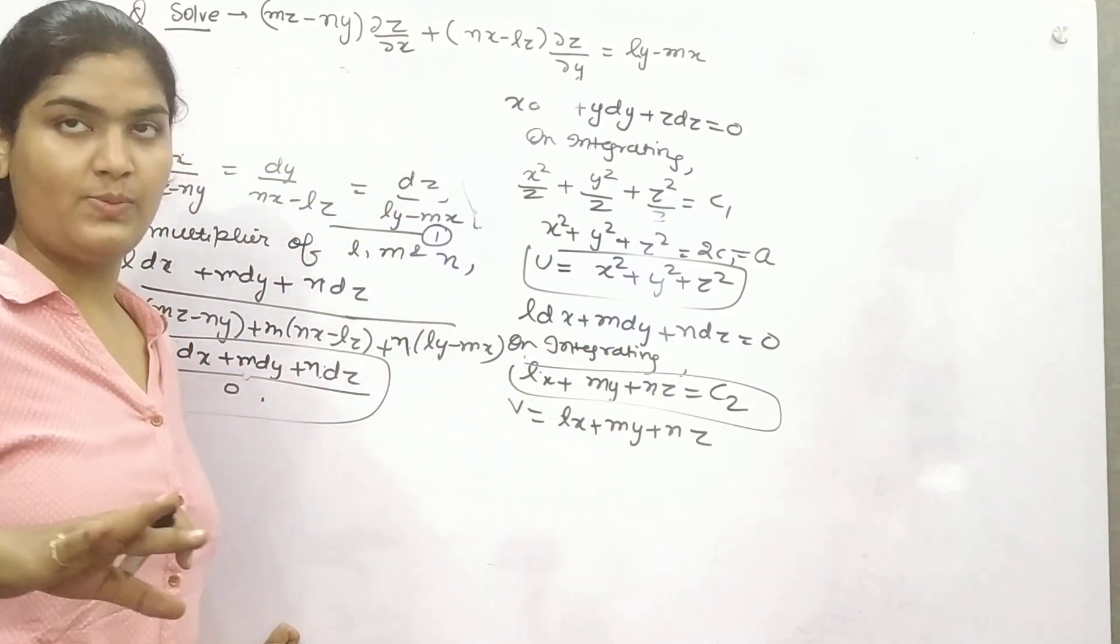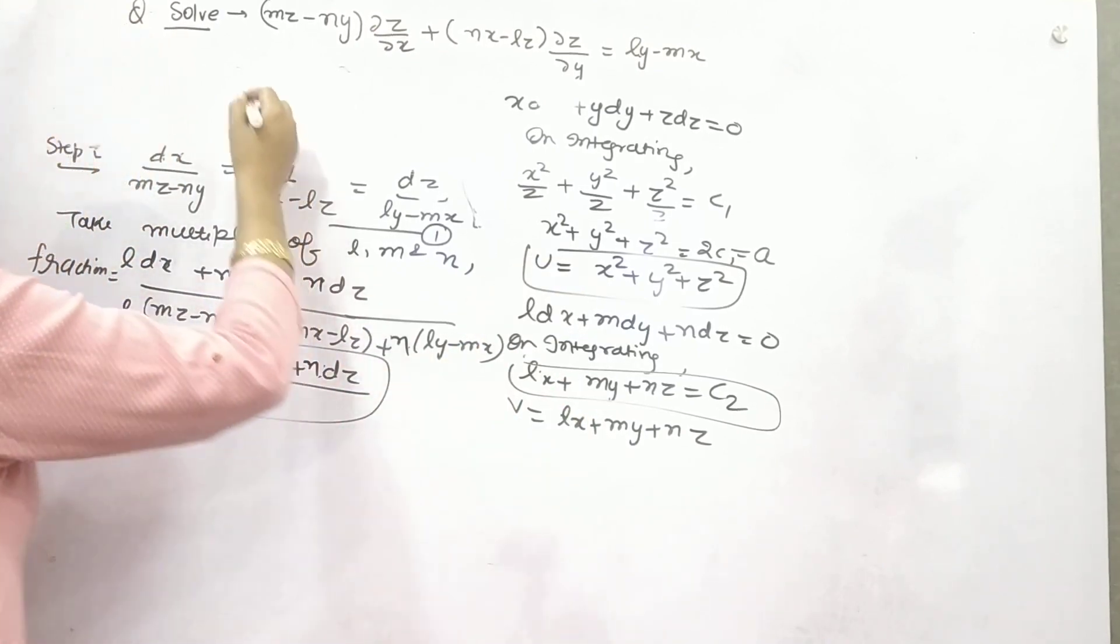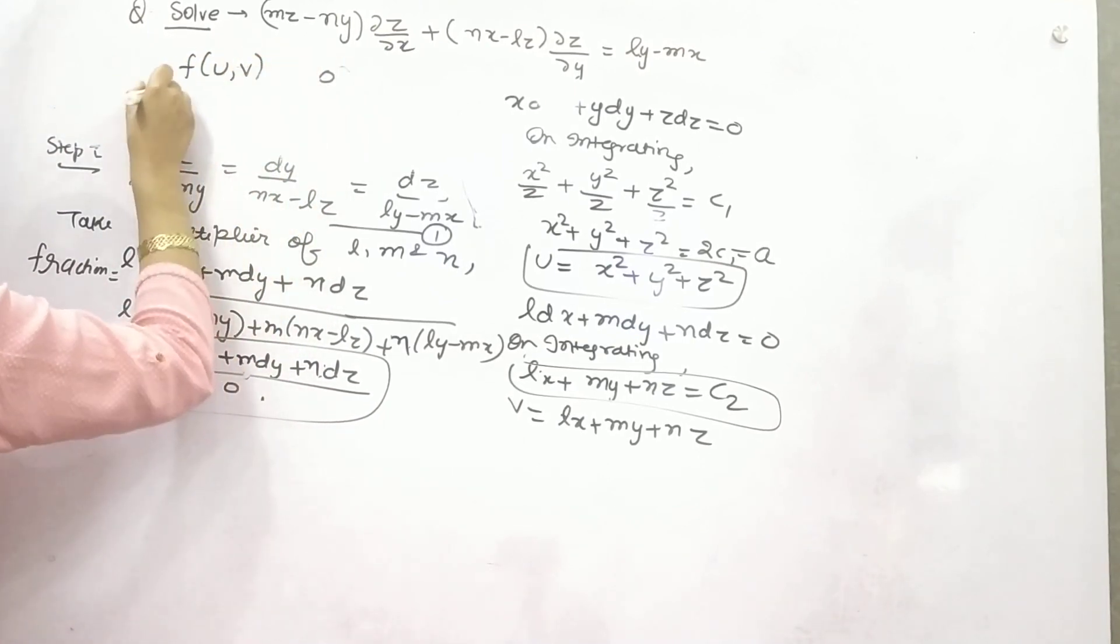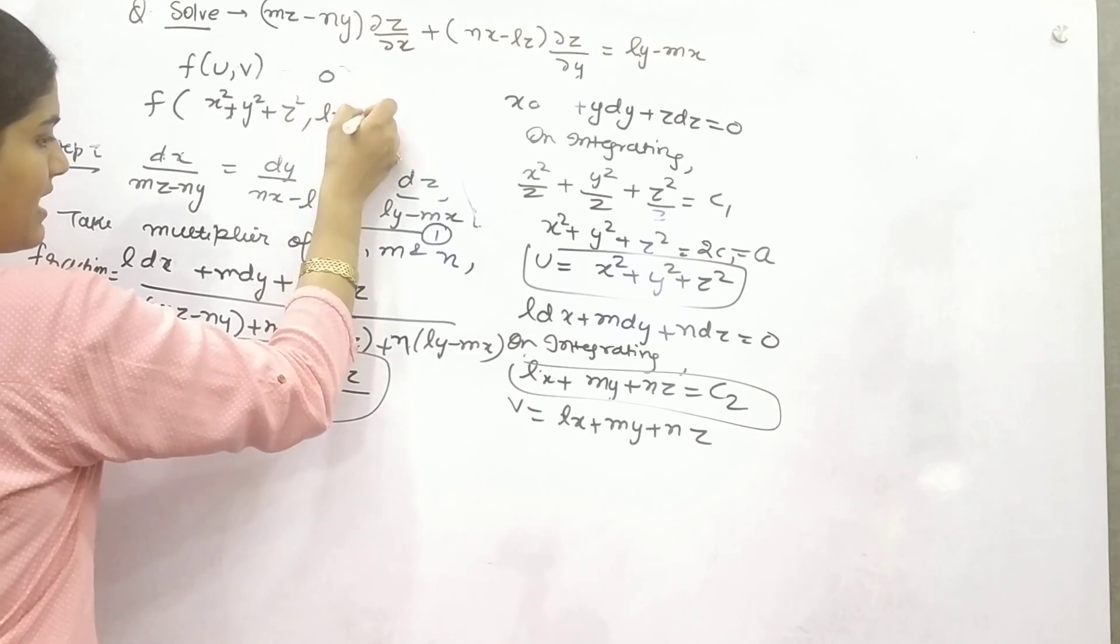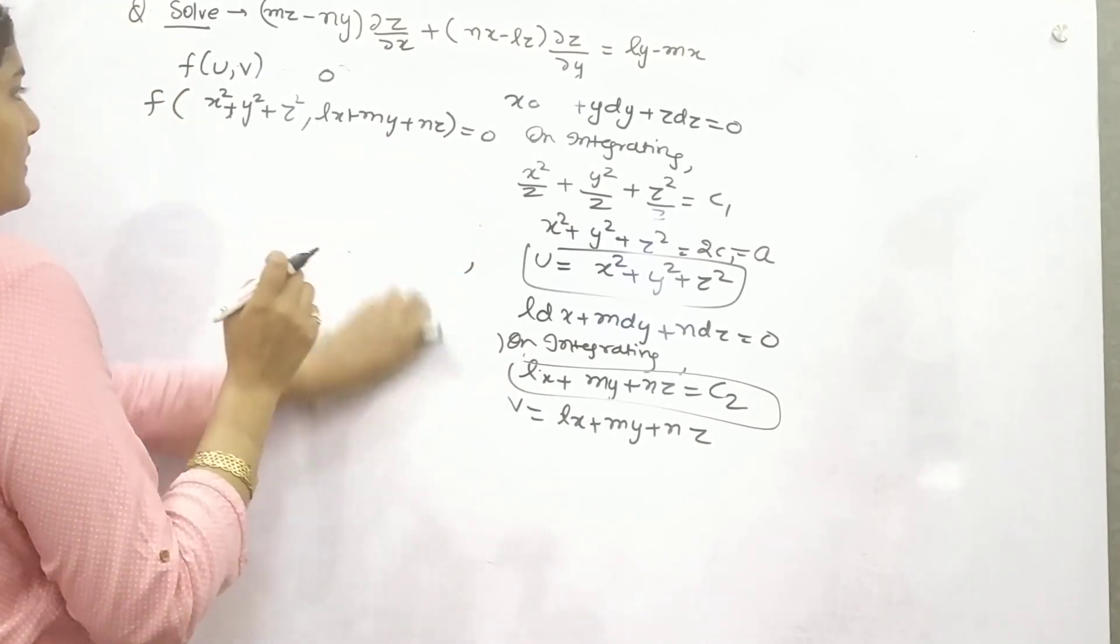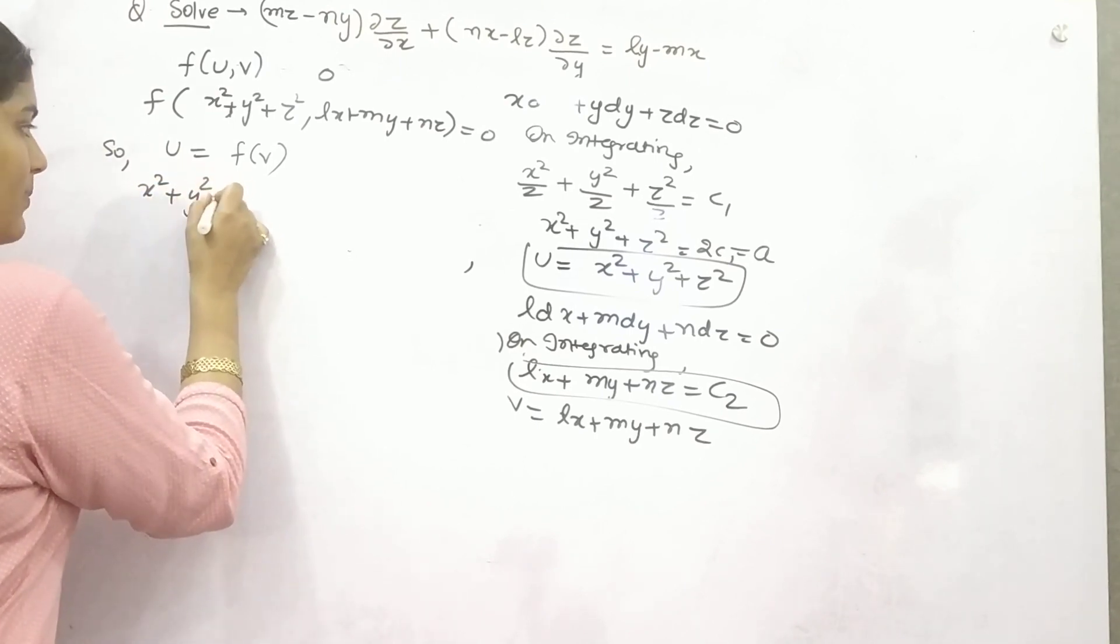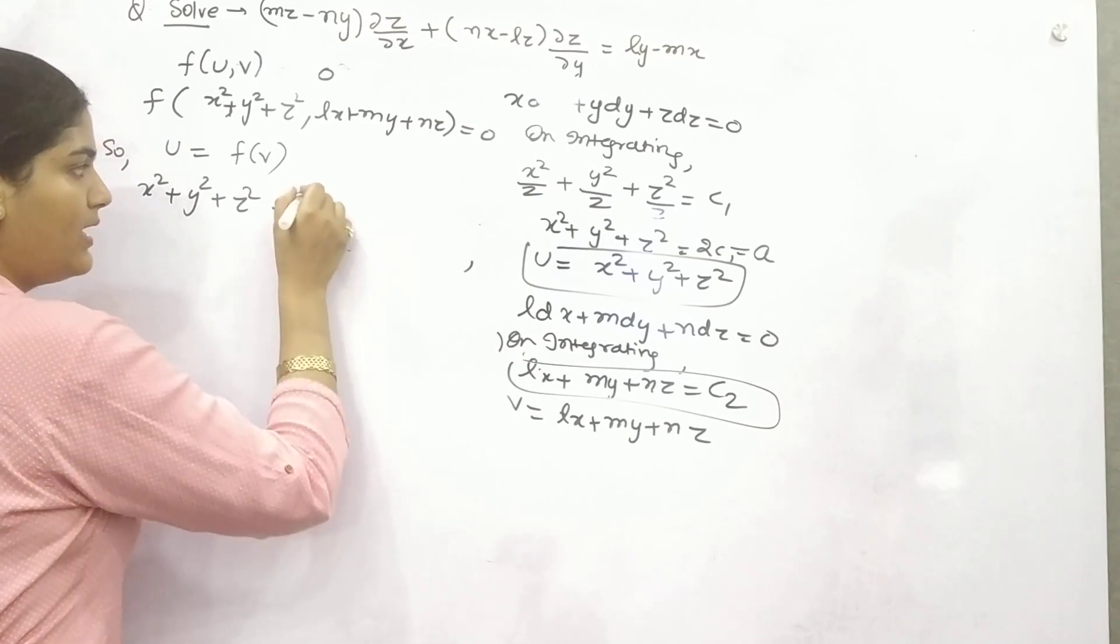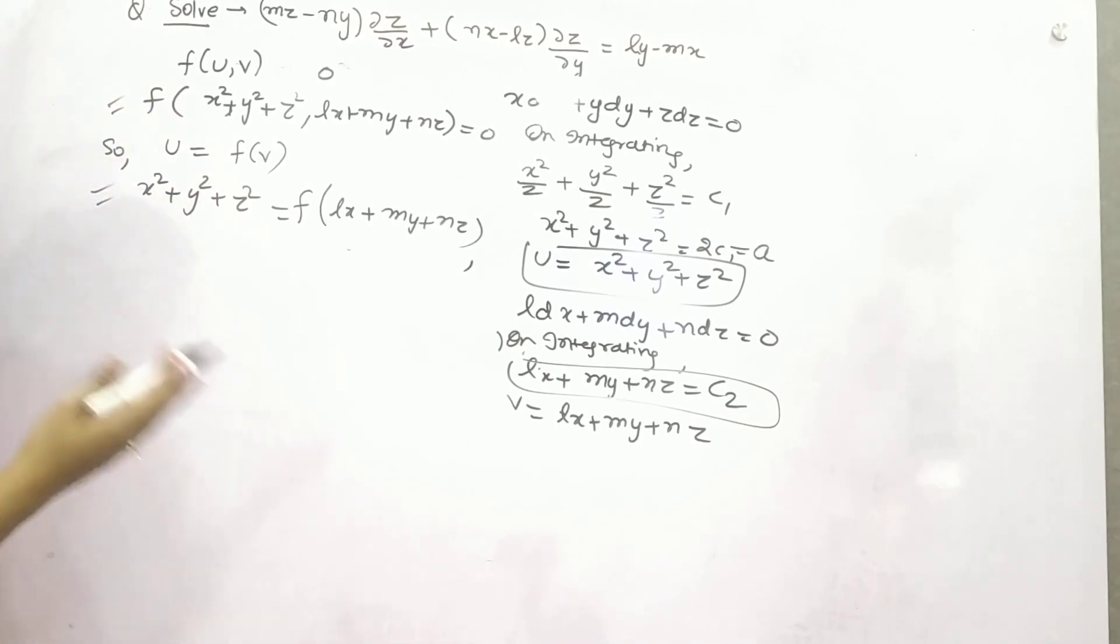So your second step has been completed when you found your two functions U and V are this. Now third step: your complete solution will be F(U, V) = 0. U is X² + Y² + Z², and V is LX + MY + NZ. Or else what you can do? Take U = F(V). So U is X² + Y² + Z², and F(V) will be F(LX + MY + NZ). Both of these are your solutions in any form, because this can be simplified into this form.